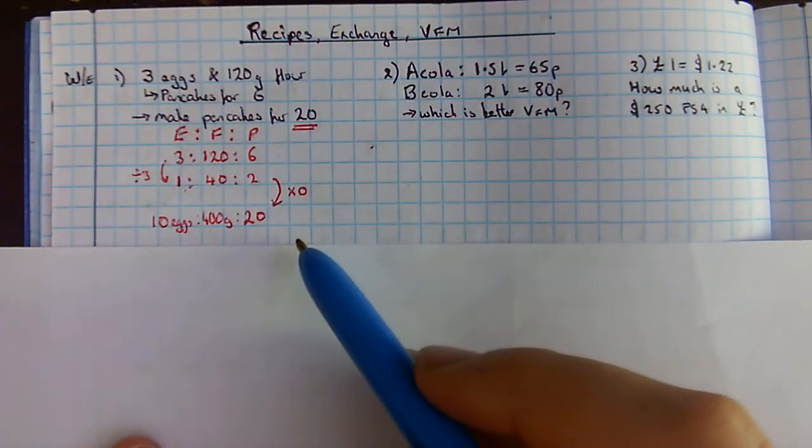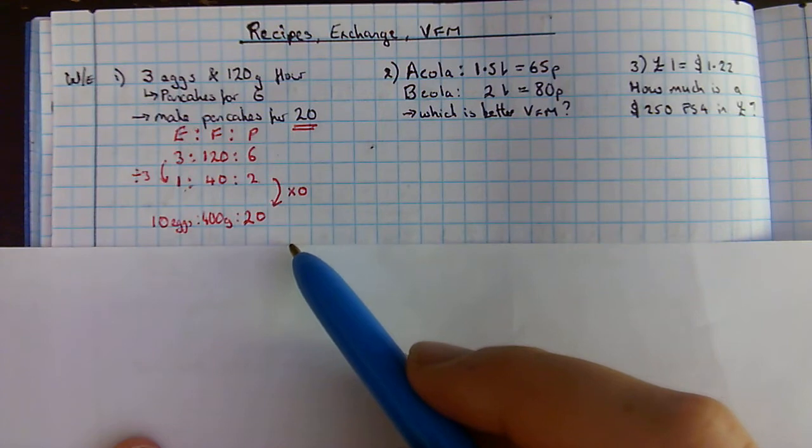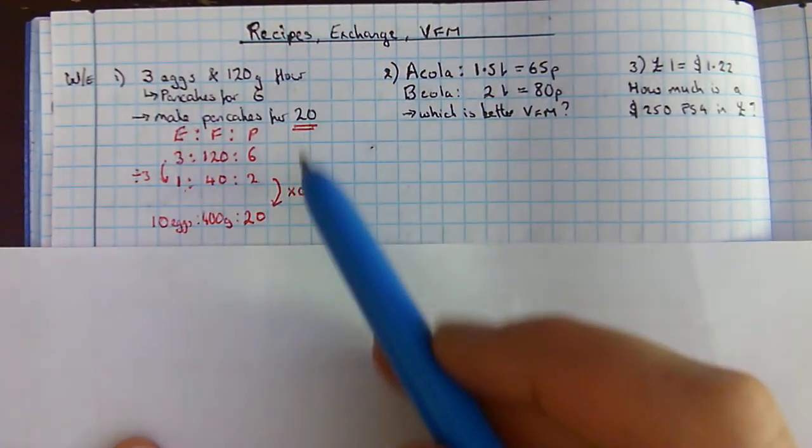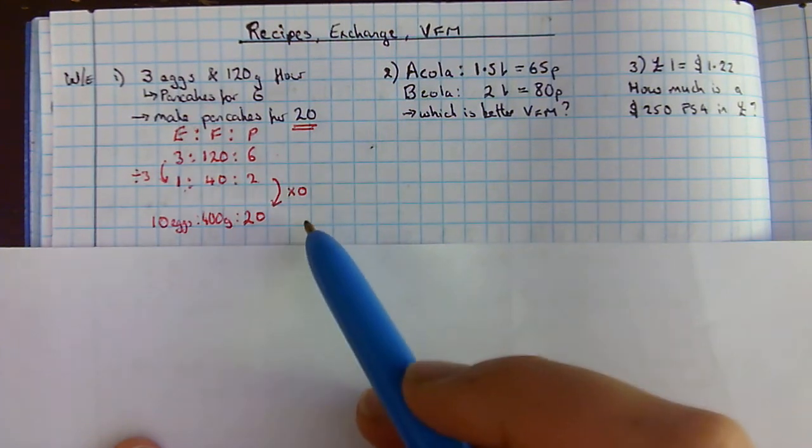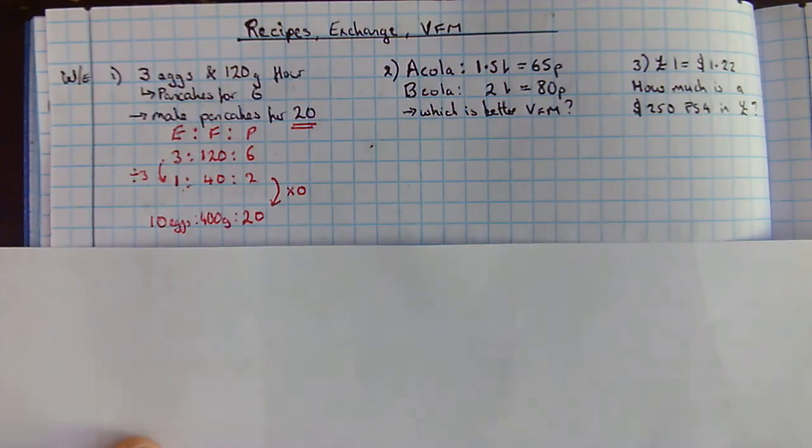Really useful skill. If any of you are looking at doing catering or enjoy cooking, you need to be able to use ratio to increase and reduce your proportions. Otherwise, your pancakes are going to end up too eggy or too floury.